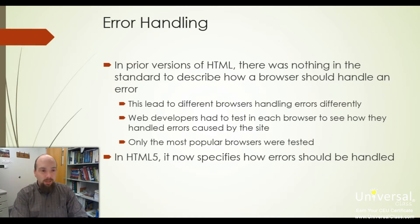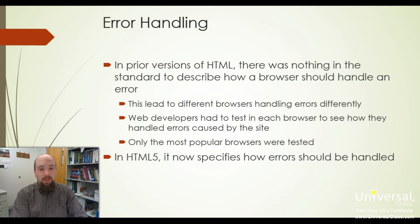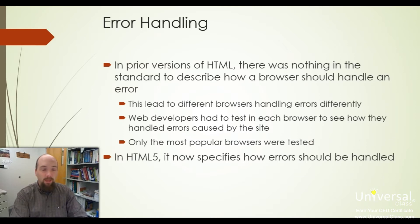In HTML4 and XHTML, any error handling was up to the developer — if something caused an error in a browser, I had to figure out how to handle it. In HTML5, error handling is part of the standard, so the browser knows how to handle it. This means I only have to test my website in a couple of different browsers, not 50. If I make my website HTML5 compliant, it will work the same in any HTML5 compliant browser, and HTML5 handles the errors for me.